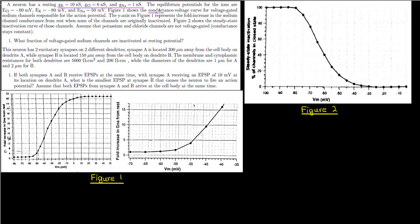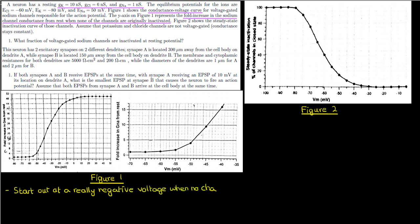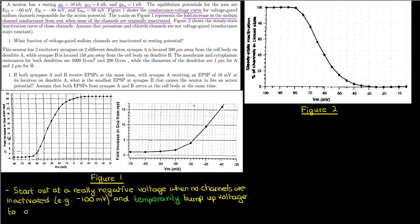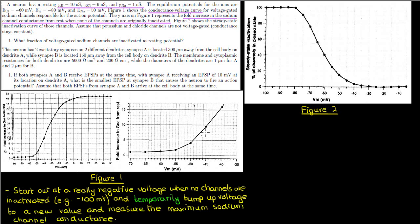The first figure shows the fold increase in sodium channel conductance when none of the voltage-gated sodium channels are initially inactivated. Basically, you start out at a very negative voltage, say negative 100 millivolts, and you temporarily bump up the voltage in varying steps, then measure the maximum sodium channel conductance corresponding to each step. This is the graph you get when you plot sodium channel conductance as a function of that voltage step.